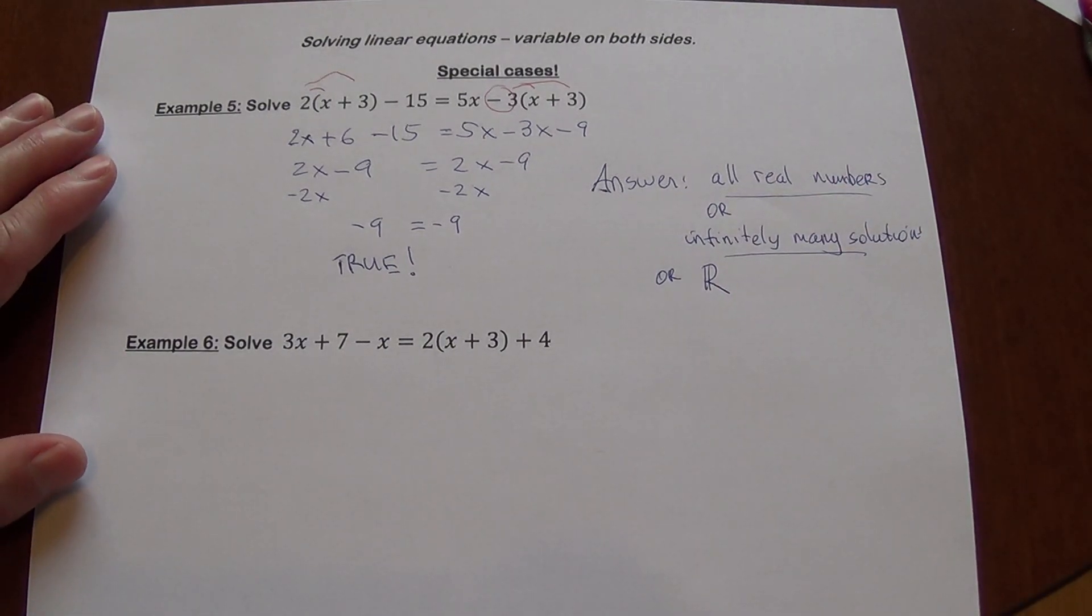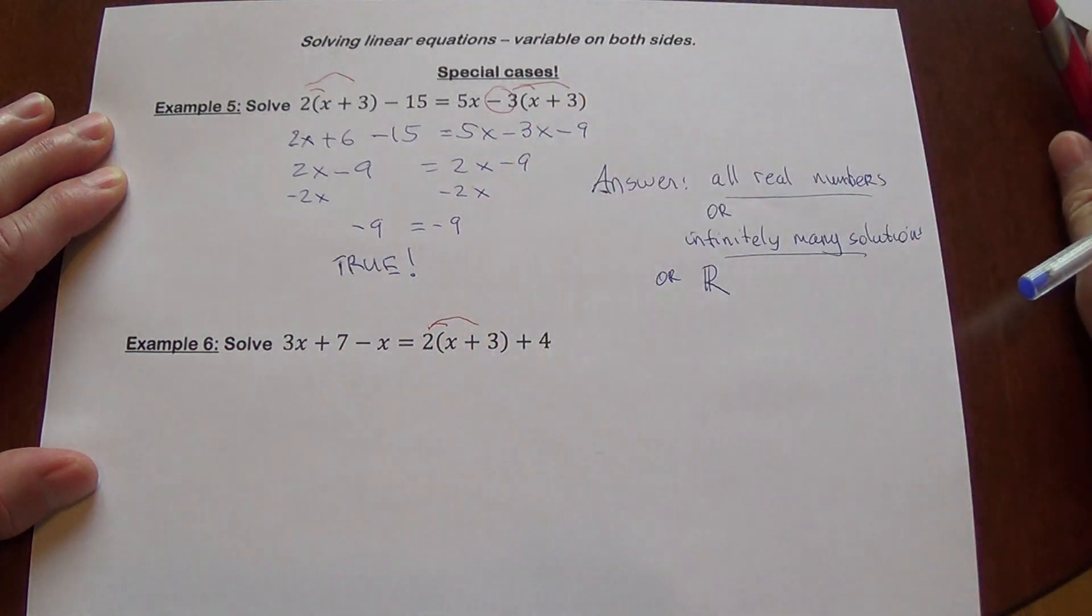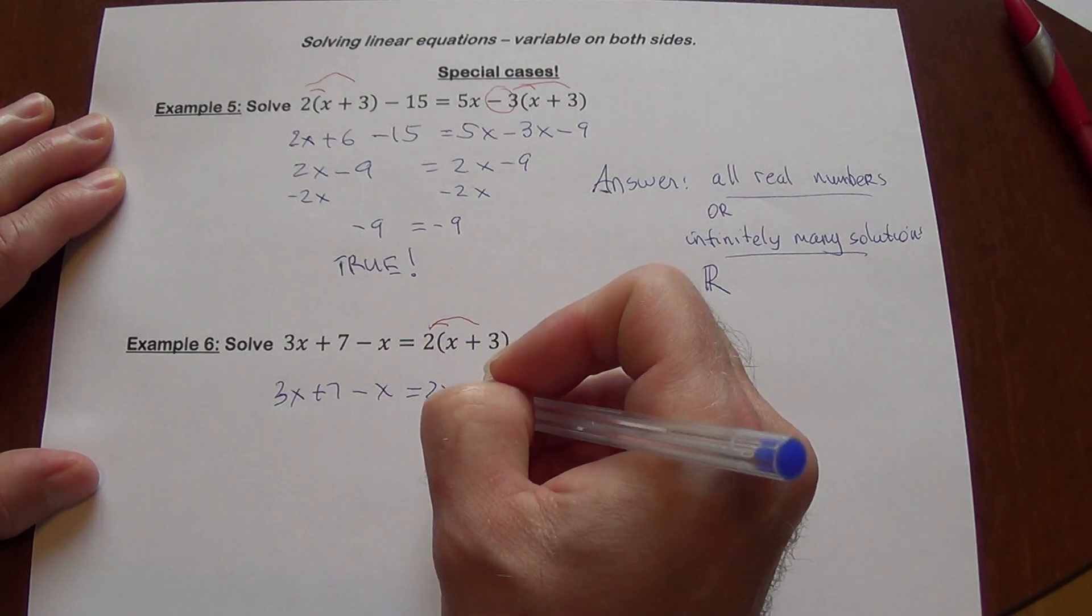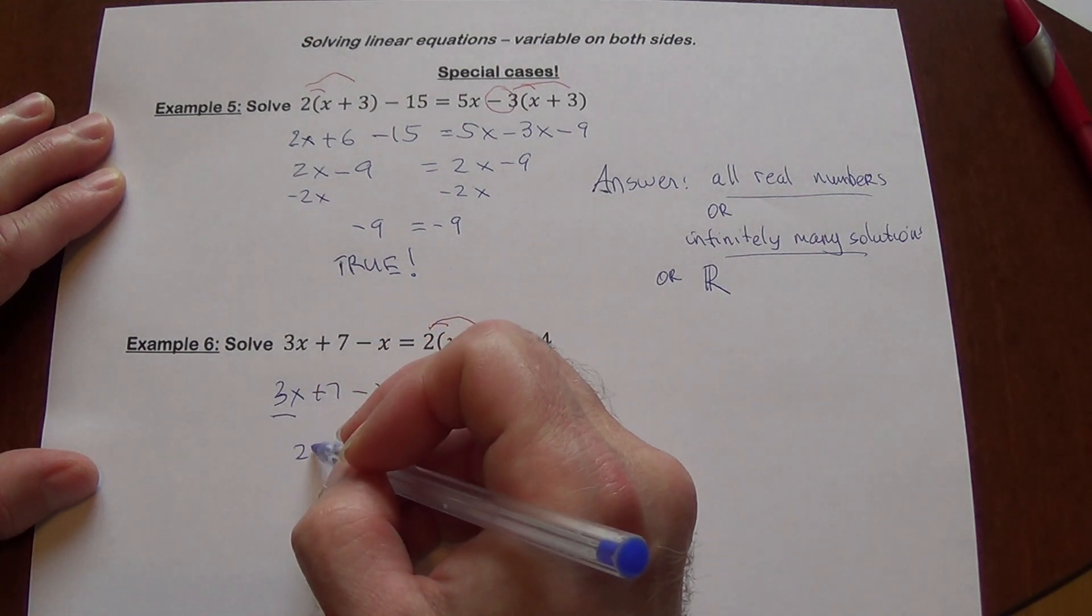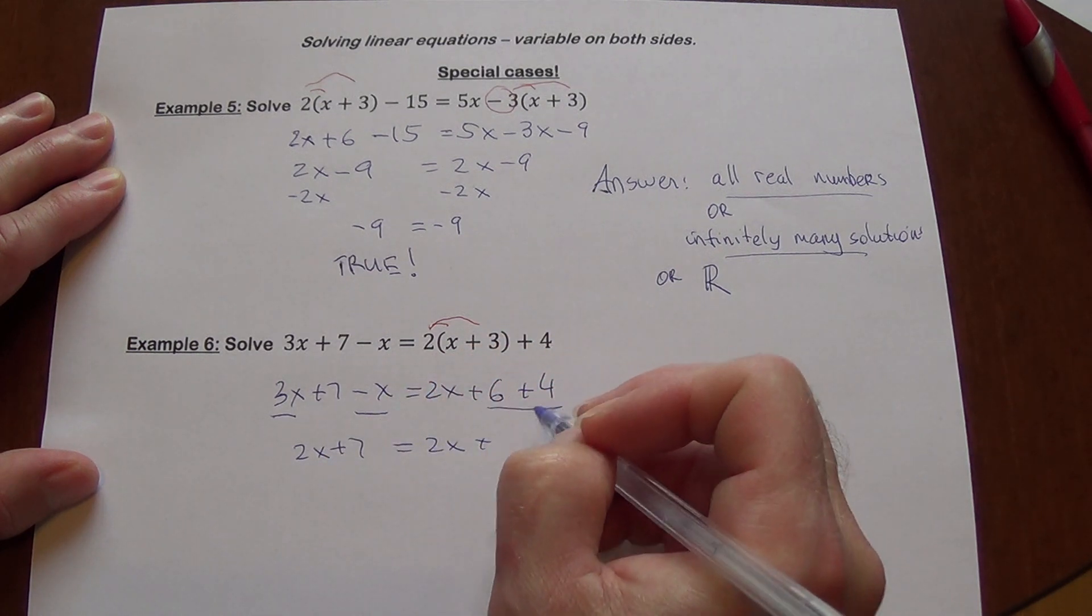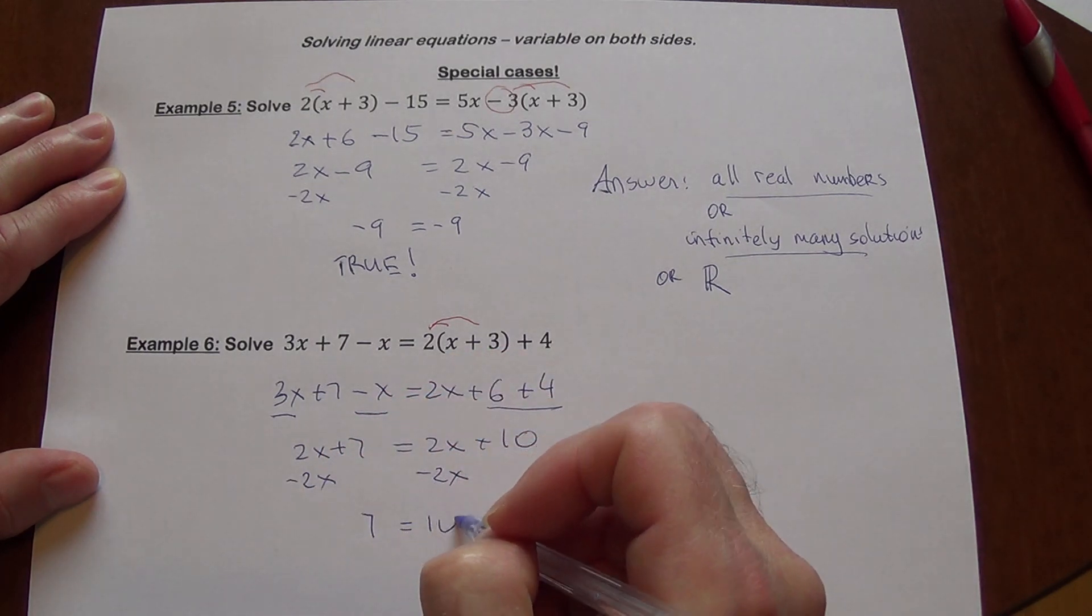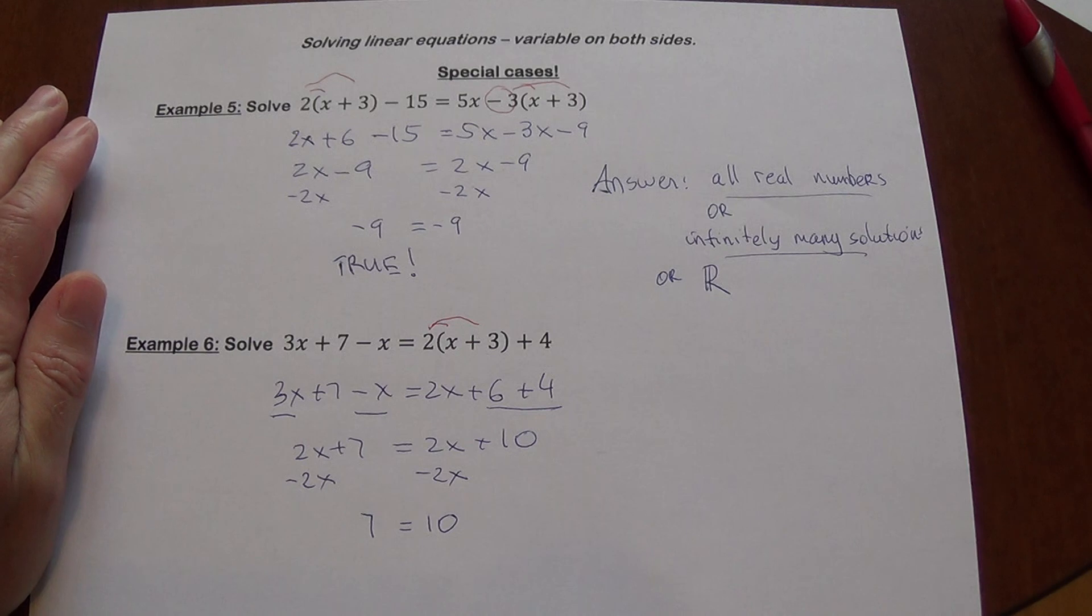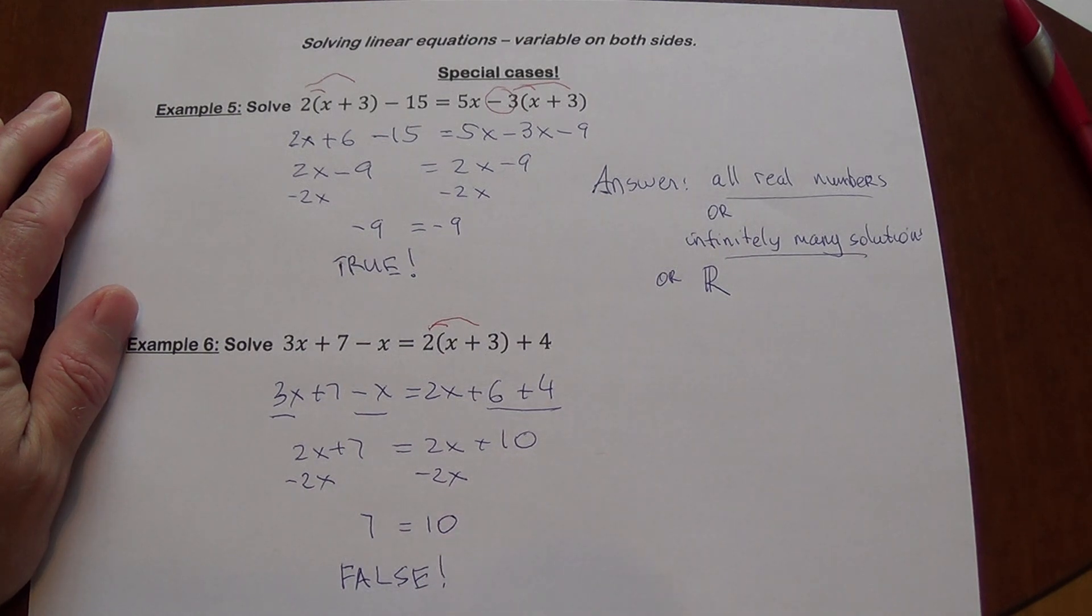And example 6. So same thing here. We will need to distribute that 2 here. So we are going to get 3x plus 7 minus x equals 2x plus 6 plus 4. Please note, 3x minus x is 2x plus 7 equals 2x plus like terms 10. And when you subtract 2x, you are going to lose the variable. But now you get a statement that says 7 equals 10. Since we lost the variable, we need to look at the statement that we have. And that statement is false. I hope you all believe that 7 does not equal 10. And that's not going to happen.